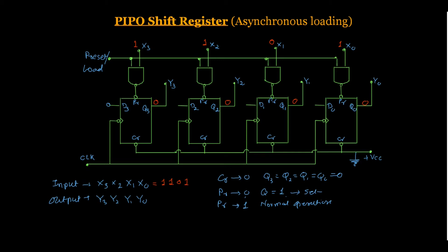Let us say the load input is high (active high). If we look at the first NAND gate, both inputs are 1 and 1, so the output of this NAND gate is 0. In the second NAND gate, input is 1 and 1, so output is also 0. In the third NAND gate, one input is 1 and another is 0, so output is 1. In the last NAND gate, both inputs are 1, so output is 0.